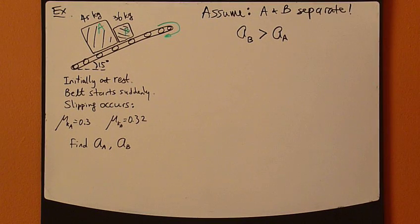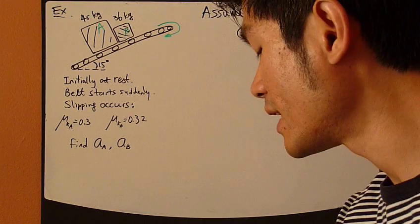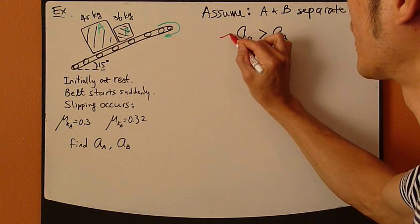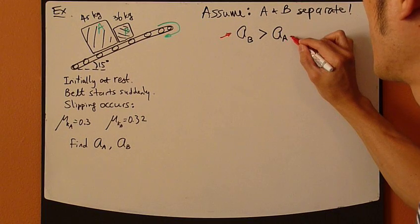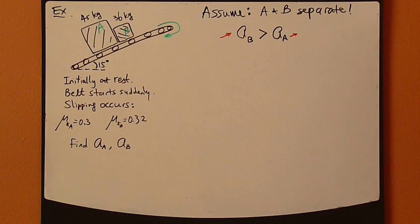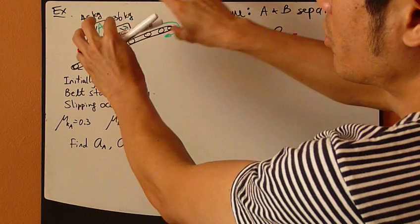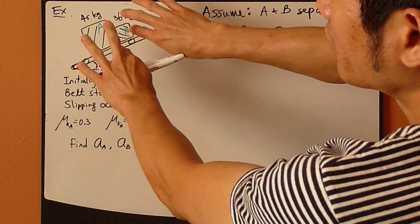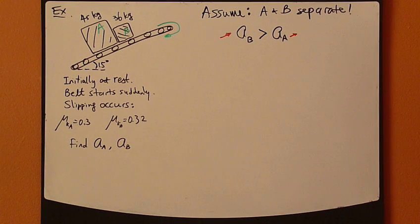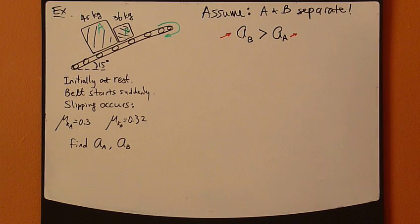Both particles A and B move upward. Acceleration of B is going this way. A_A is also going upward, but A_B is greater than A_A, so that they will separate. So box B will move faster than box A. But both will tend to move up. So that's my assumption. Let's go with the assumption and apply the kinetic equation, second law.